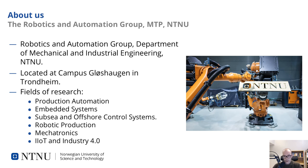The Robotics and Automation Group is led by Professor Ola Veglan and is part of the Department of Mechanical and Industrial Engineering. We are currently located at Campus Glöshagen, where we are now building the largest university robotics lab in Norway. We do research in several fields within robotics and automation, and among these are production automation, embedded systems, subsea and offshore control systems, robotic production, mechatronics, as well as Industrial Internet of Things and Industry 4.0.